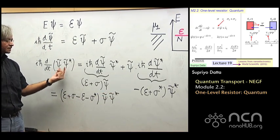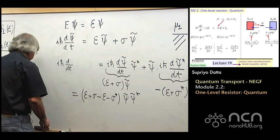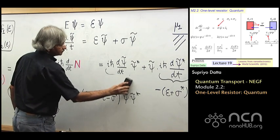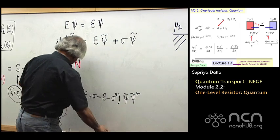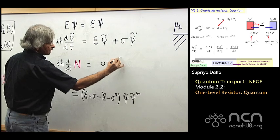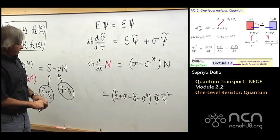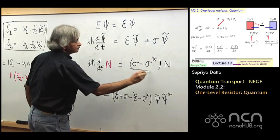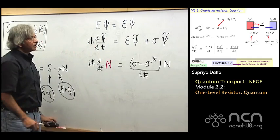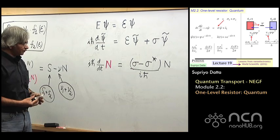Interpreting psi·psi* as N, you see what you have got is i·h-bar·dN/dt. So dN/dt is equal to — the epsilon cancels out — what you have is (sigma − sigma*)·N. That's what you get from the Schrodinger equation if you just add this complex term. Compare it with what we had written down for the simple rate equation: dN/dt = S − nu·N.